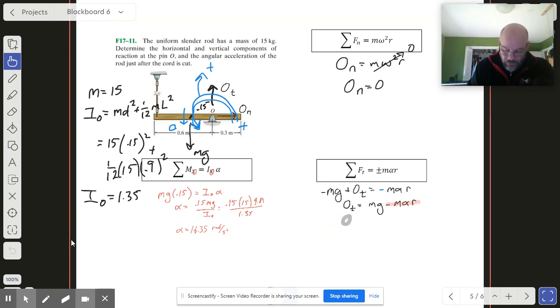So we get O_t. It's our 15 times 9.81 minus 15 times our alpha which is 16.35 and our radius is still 0.15, like that. And we're gonna get 110.3.